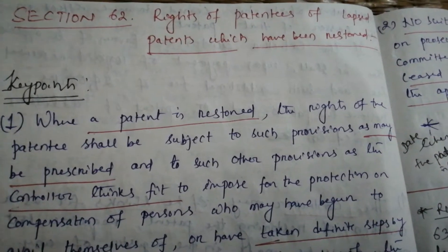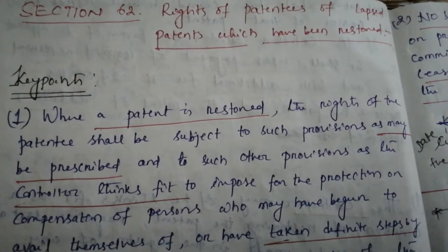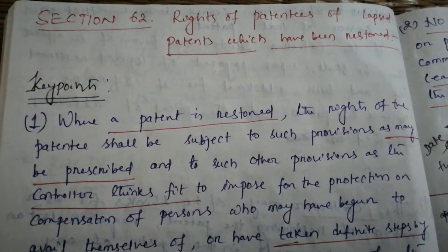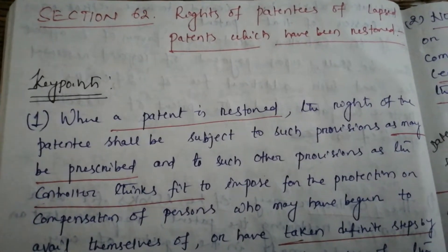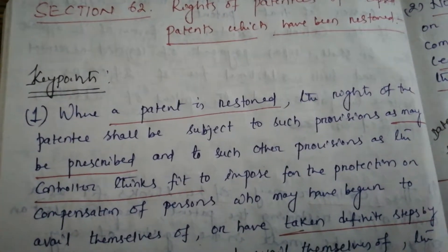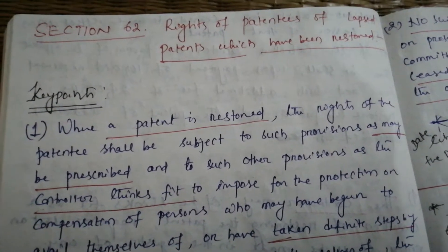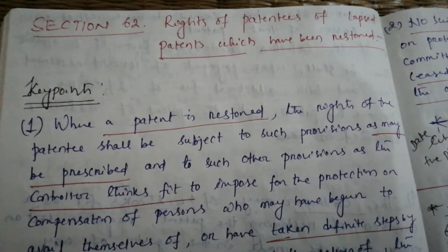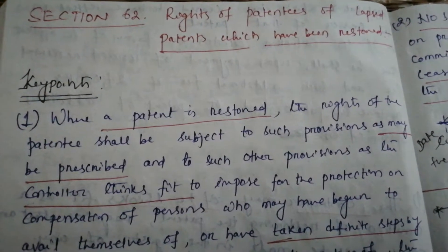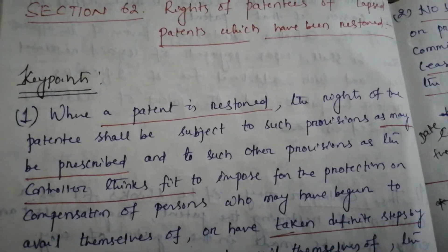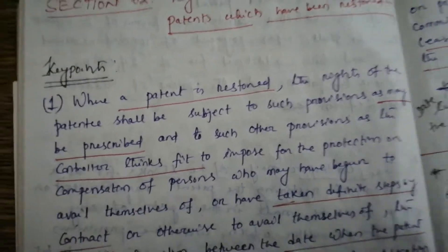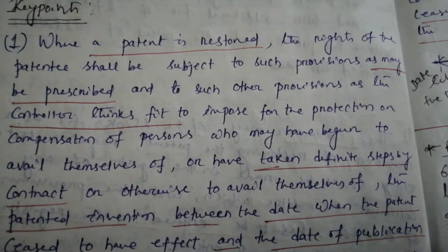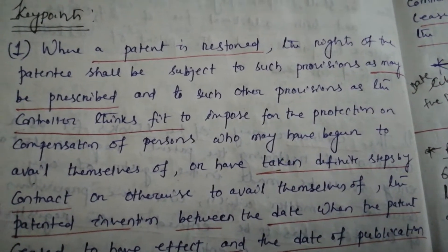The title of section 62 is 'Rights of Patentees of Lapsed Patents which have been Restored.' That means we will discuss about the patentee rights when a lapsed patent is restored again. I will explain all the subsections through my key points.